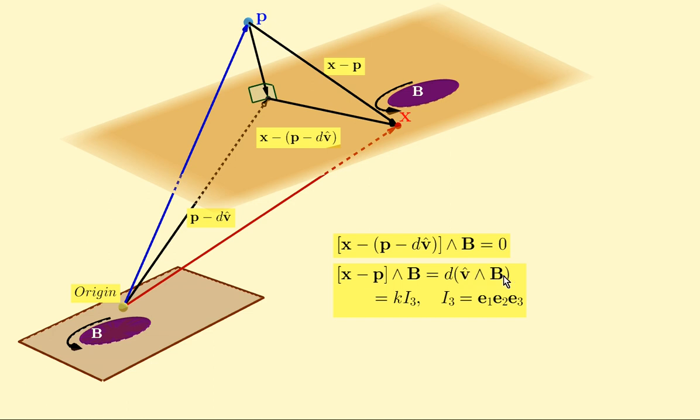Now, because V is perpendicular to B, V hat wedged with B will be some scalar multiple of the unit trivector. And the unit trivector for any, well, for any orthonormal basis I should say, is just the product of the three orthonormal basis vectors.